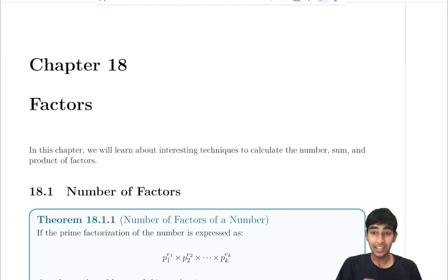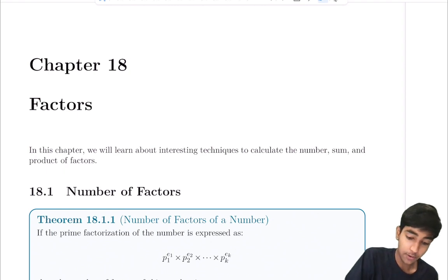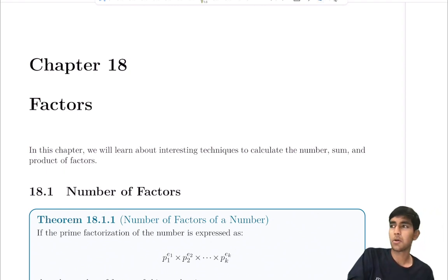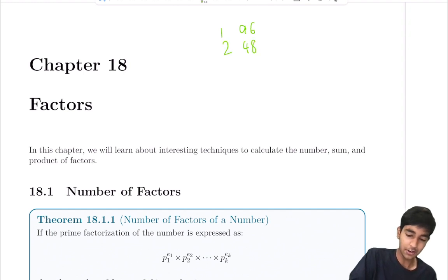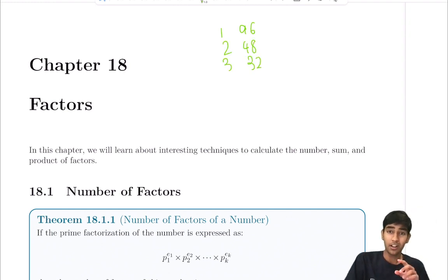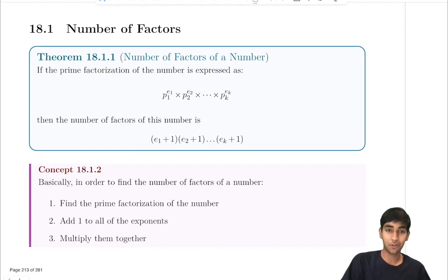Today we're learning some really cool shortcuts for factors. I'm sure you've all done this before where you write out a giant number like 96, and list out 196, 248, 3, 32 — but if you've done this before, this might be the last time you need to do this, because we're about to learn some really cool tricks.